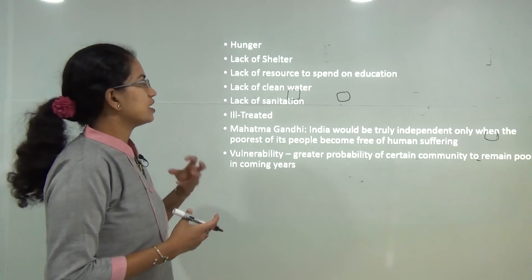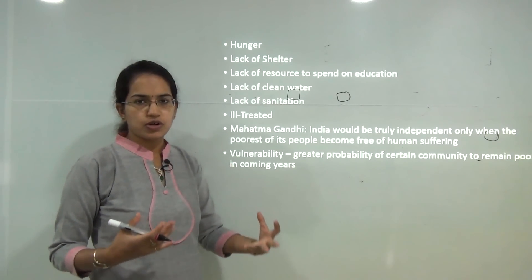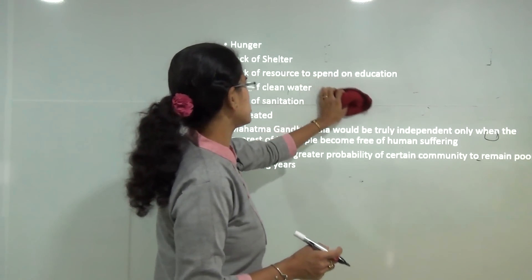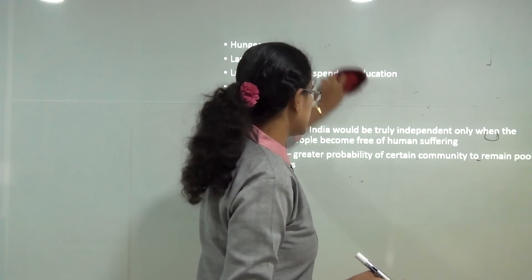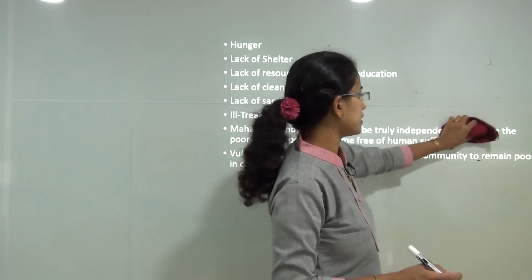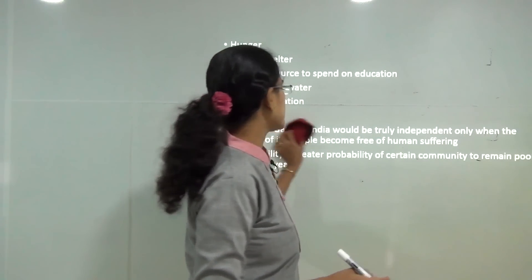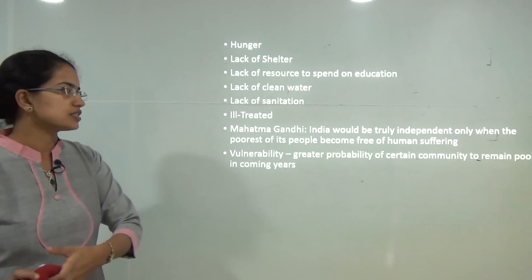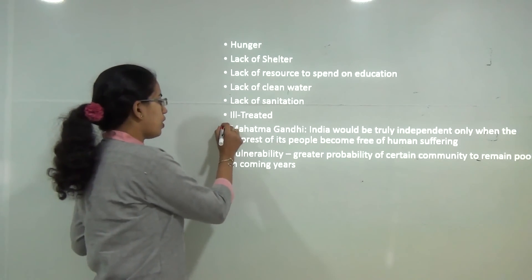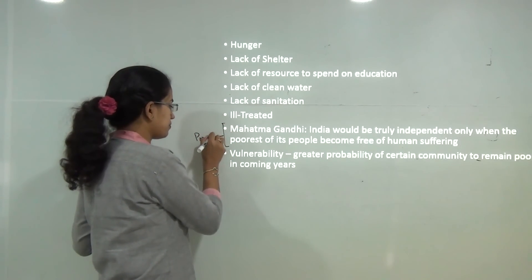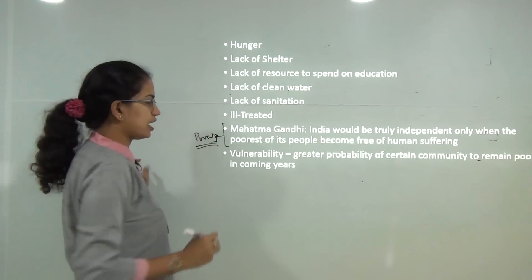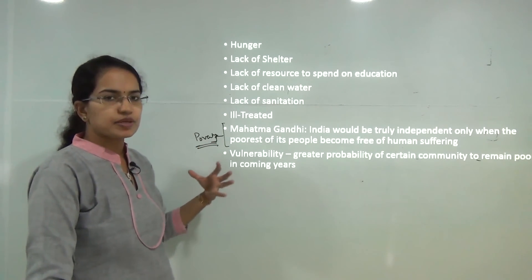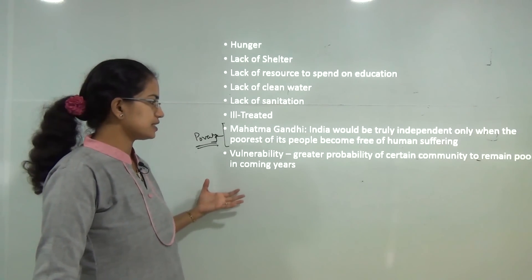The poor face hunger, lack of shelter, and lack of clean water and sanitation facilities. Poor people may also be ill-treated. Gandhiji rightly said India would be truly independent only when the poorest of the poor is free from human suffering. Poverty alleviation has been a basic focus since independence, leading to many anti-poverty measures.